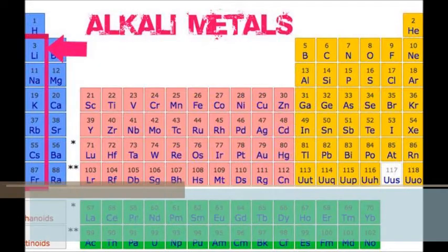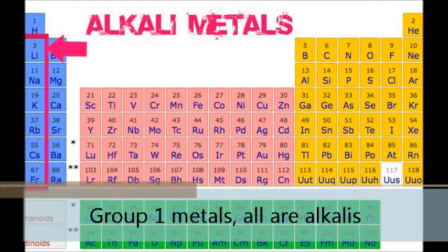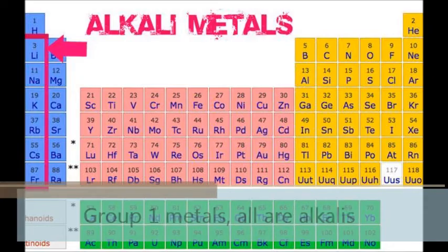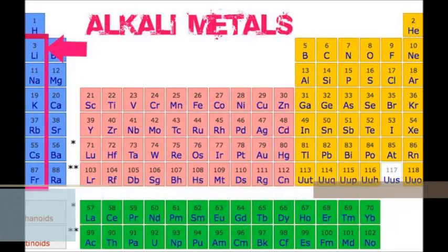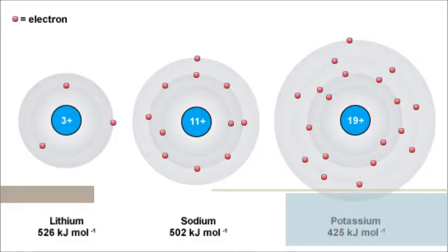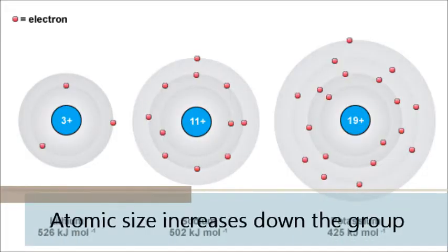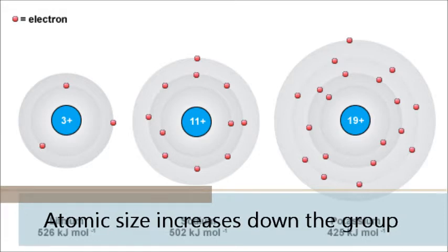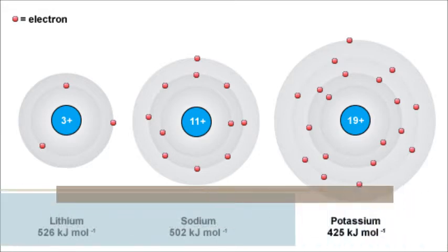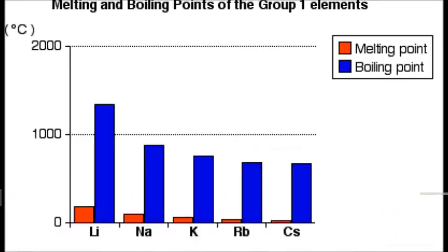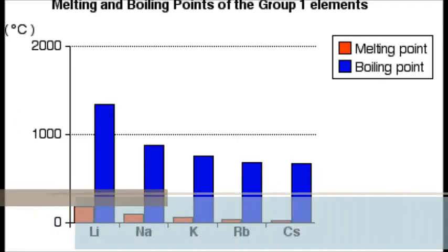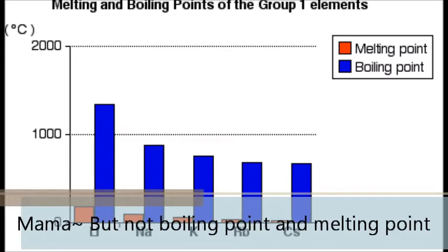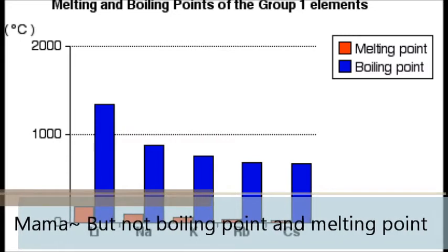For Group 1, all are alkalis. Atomic size increases down the group, but not boiling point and melting point — these decrease down the group.